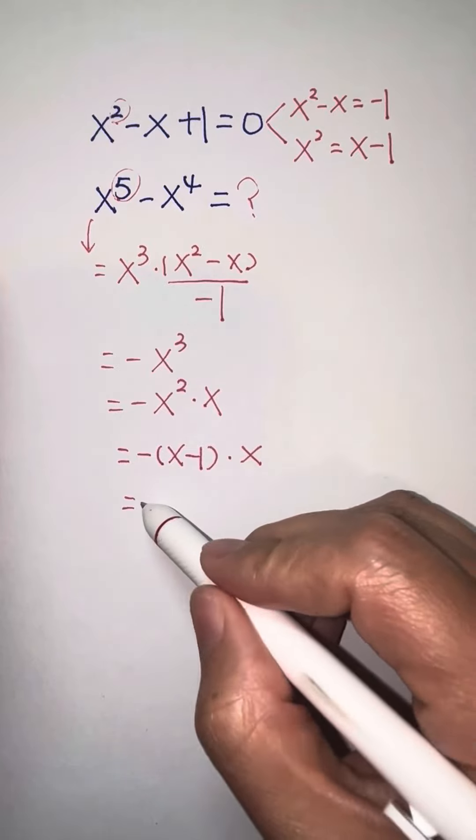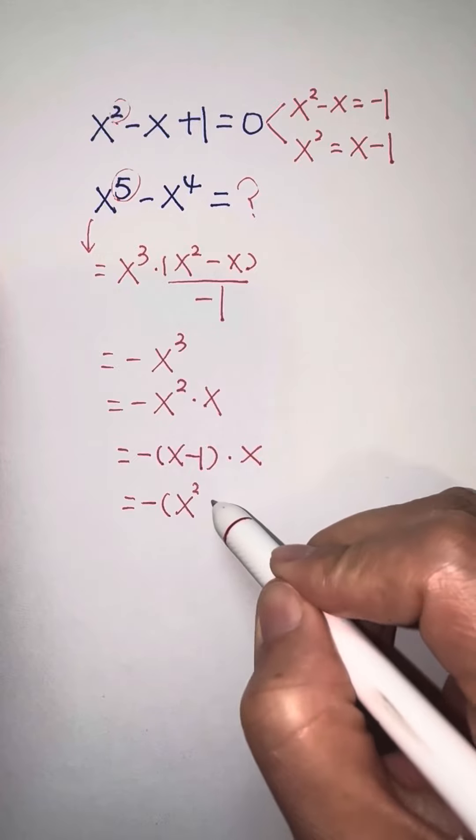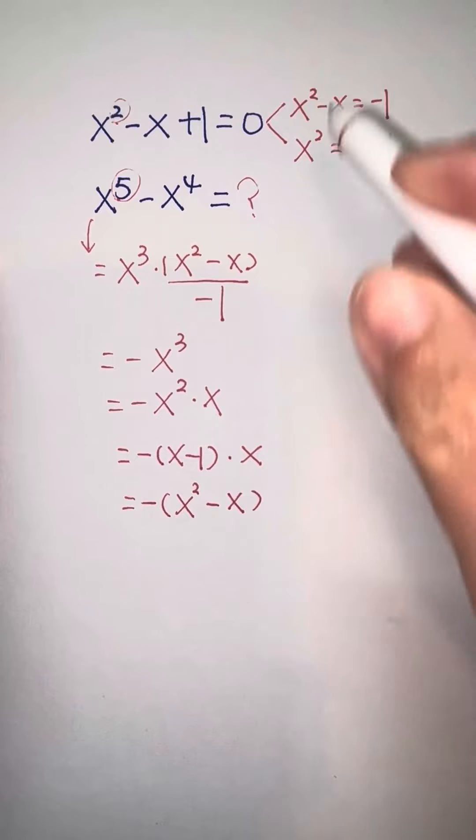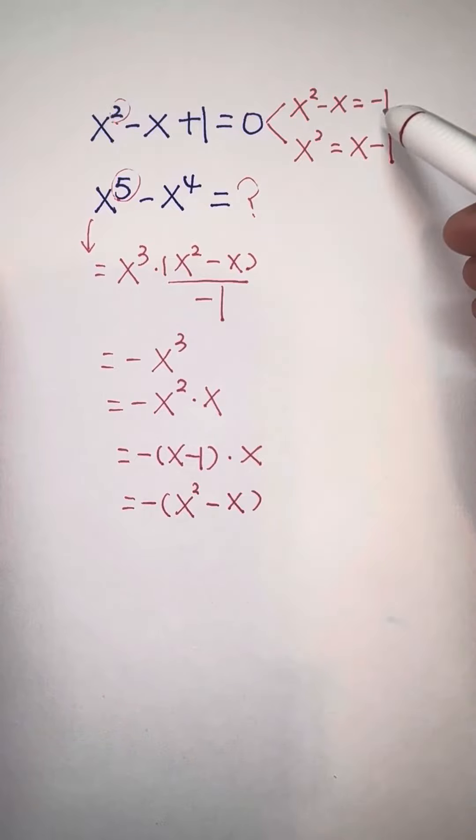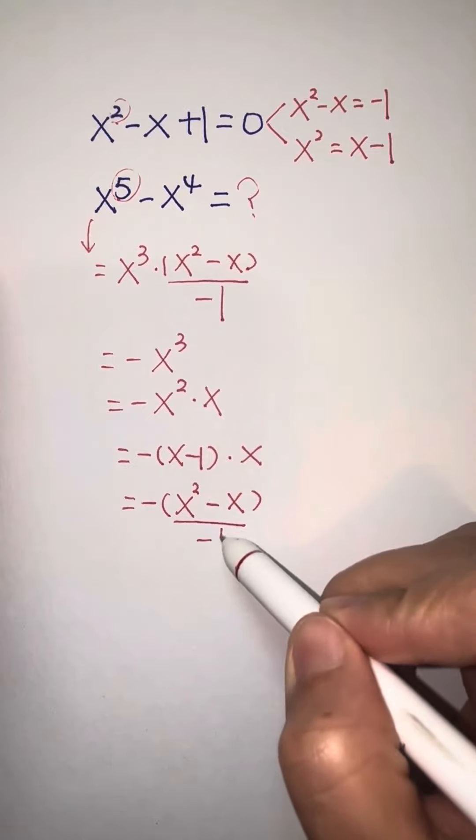And keep doing. Negative, put x in, x squared minus x. So right here we see x squared minus x equals negative 1. So again, put negative 1 here.